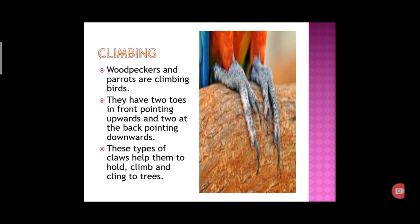Climbing. The birds which have two toes in front pointing upward and two toes at the back pointing downward, these help them to hold, climb and grip tightly to trees. For example, woodpecker and parrots. In this picture, two toes are in the front and two toes are in the back side.